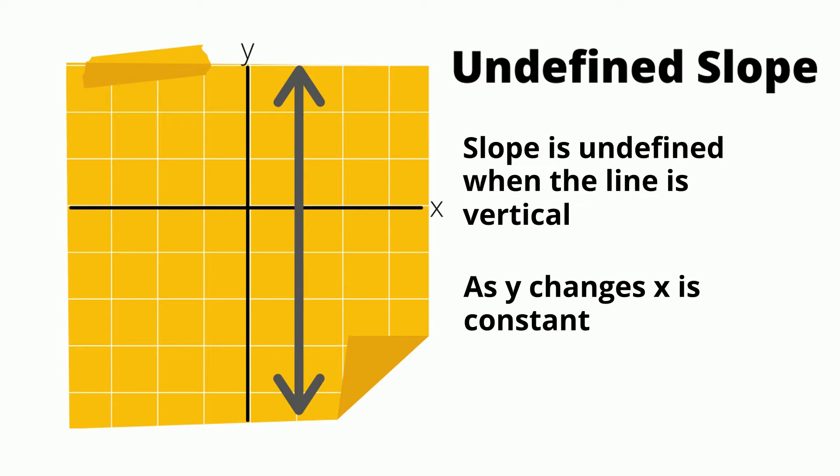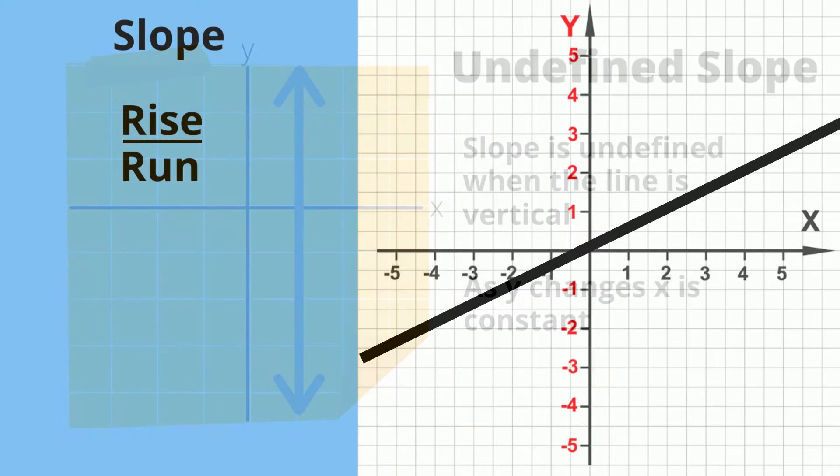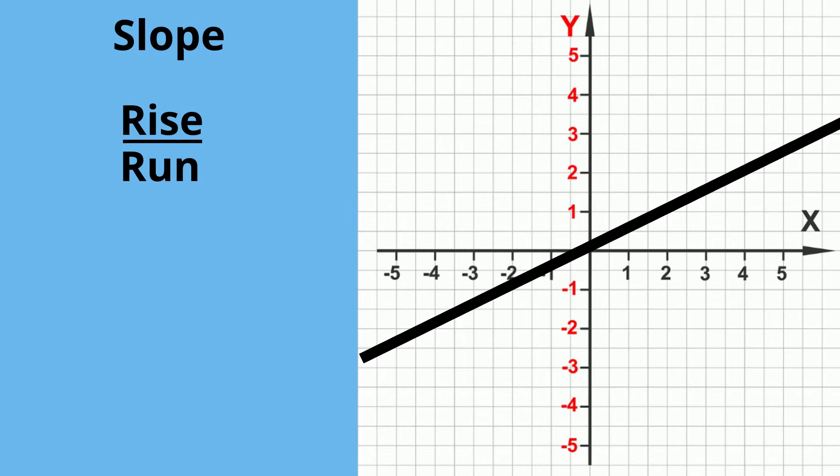The slope of a line can be calculated using the following formula. Slope equals rise over run, where rise is the vertical change between two points on the line, and run is the horizontal change between two points on the line.